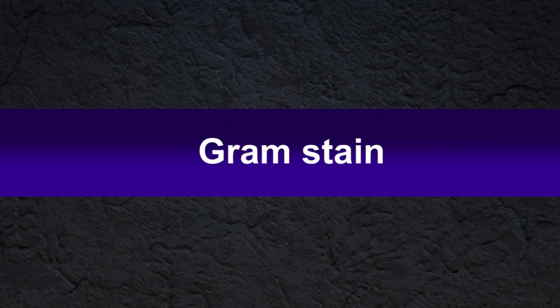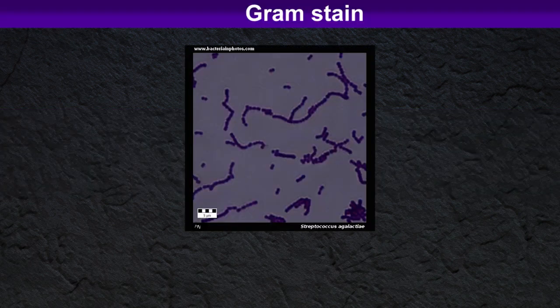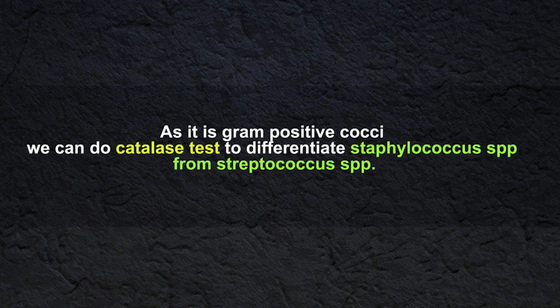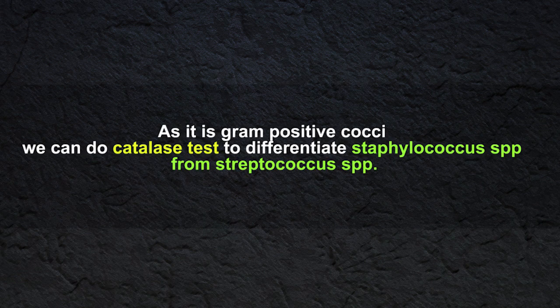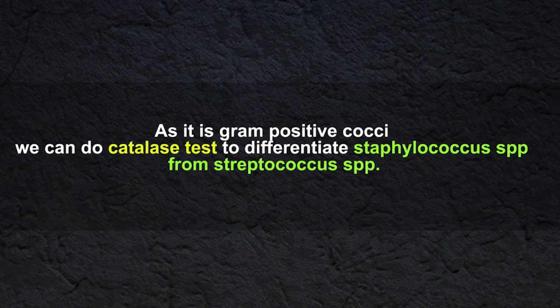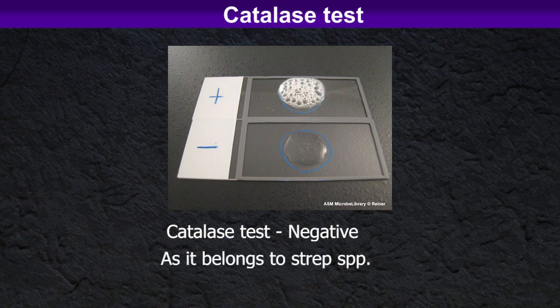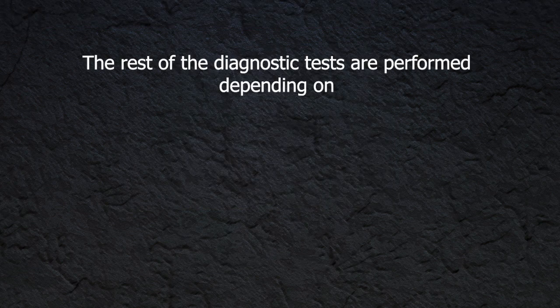The next test to perform is Gram stain. Gram stain reveals gram-positive cocci in chains. As it is gram-positive cocci, we can do the catalase test to differentiate Staphylococcal species from Streptococcal species. Streptococcus agalactiae gives negative results for the catalase test, as it belongs to the Streptococcus species.